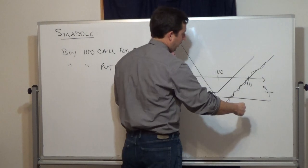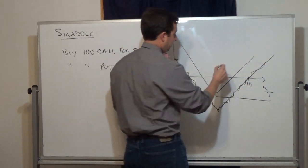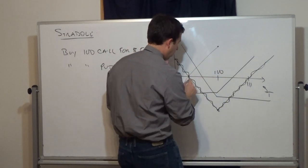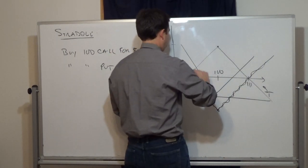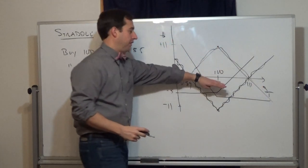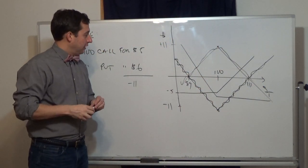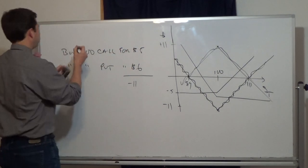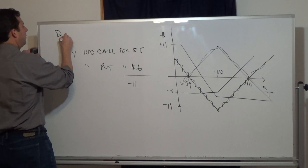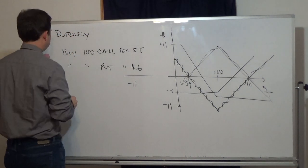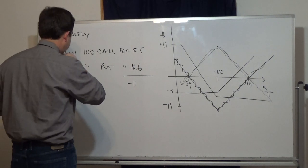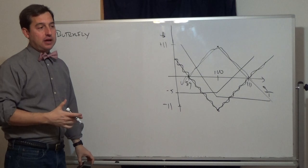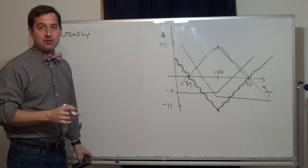The short straddle is just the mirror image — you draw the short call and short put positions and confirm that it will be plus $11 at the peak, reflected above the stock price axis. That's the straddle. Now the next one is a butterfly.